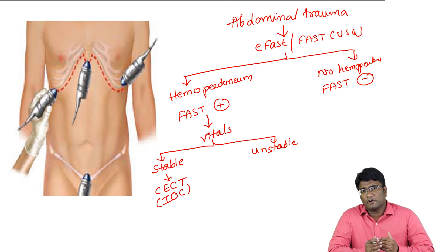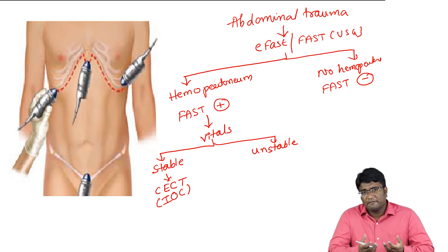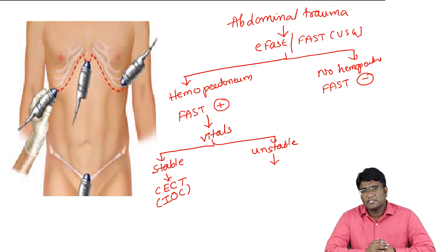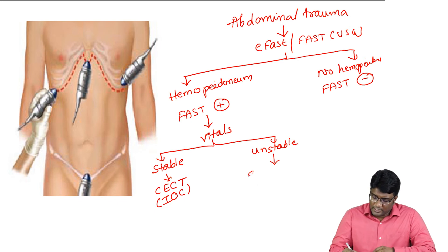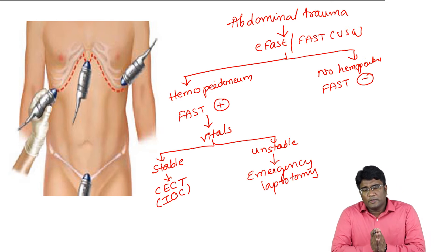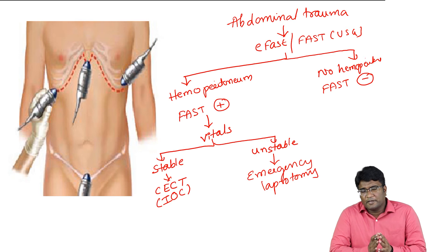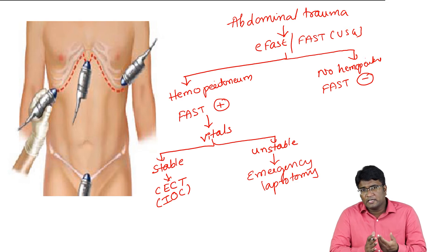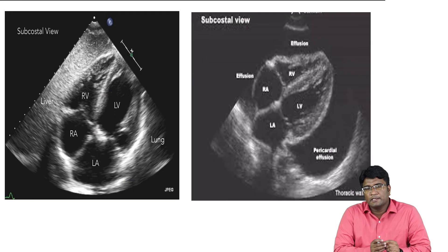If the patient is unstable — blood pressure is low and pulse rate is feeble — you do not have time for a contrast study. You immediately perform an emergency exploratory laparotomy, identify the bleeding organ on the operation table, and perform procedures like splenectomy or control the bleeding vessel. When the patient is unstable and FAST is positive, do not send the patient for CECT — go for emergency laparotomy.